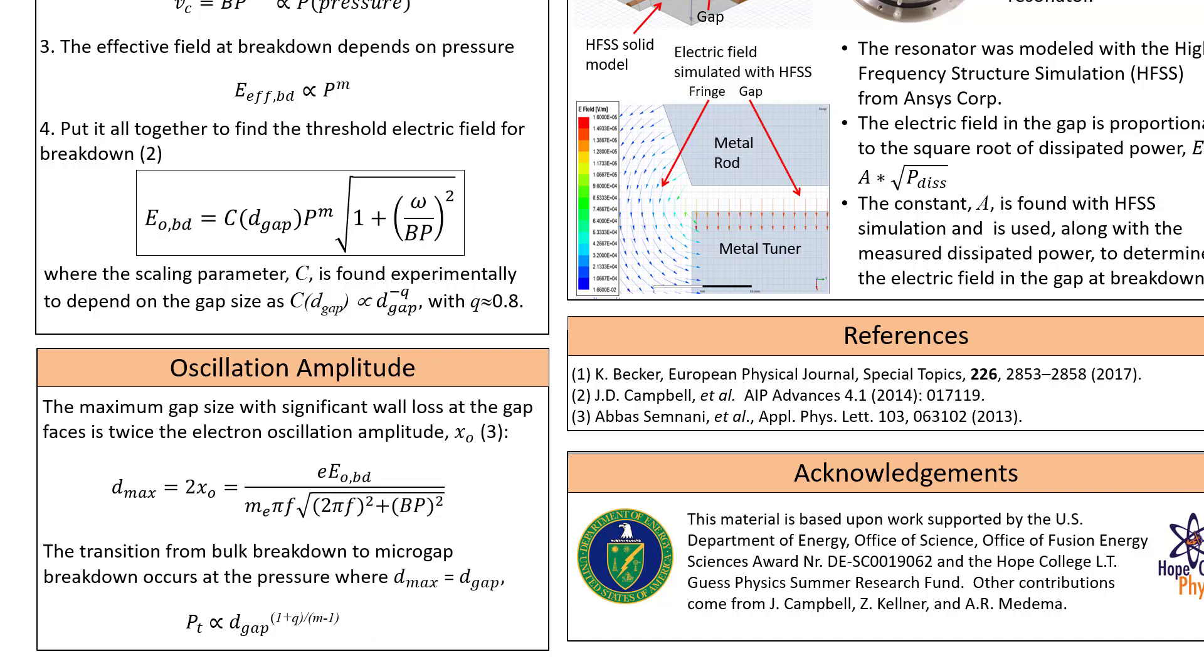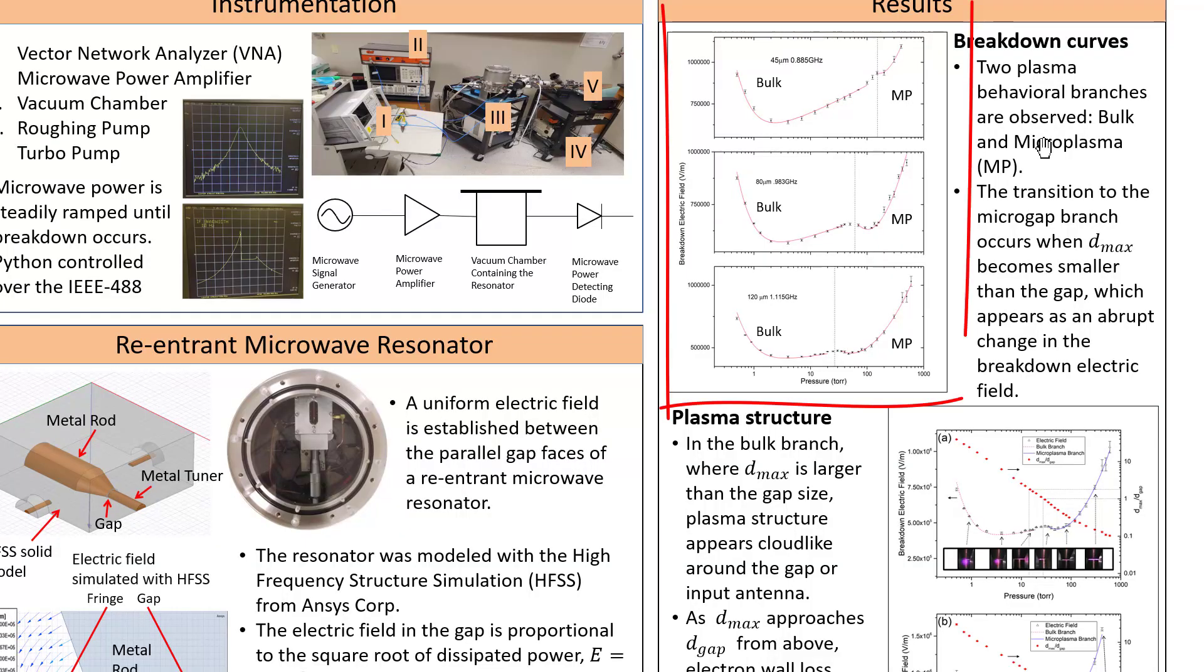With the model equation for the threshold breakdown electric field as a function of pressure and these fit parameters, the experimental test of a model then would be to generate such breakdown curves at different gap sizes. To generate a series of threshold electric field versus pressure graphs, a re-entrant microwave cavity resonator is used.